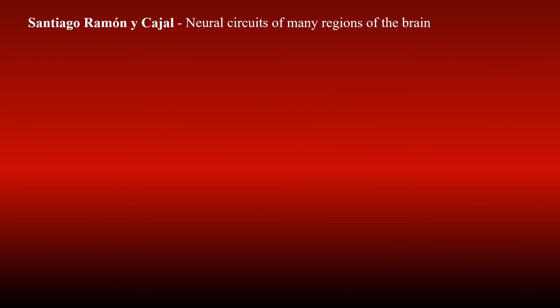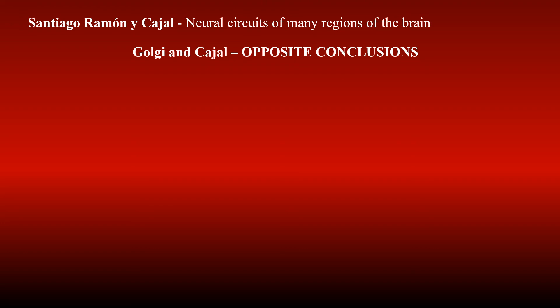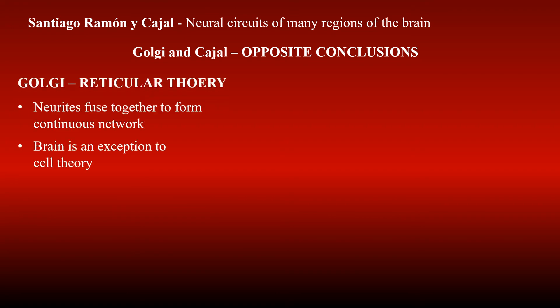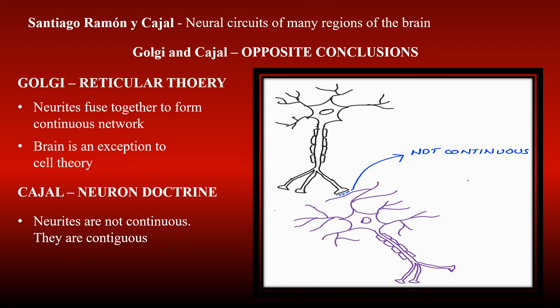This Golgi stain was used by another scientist, Cajal, to map the neural circuitry of many regions of the brain. He worked with this stain for over 25 years and came to some conclusions — and here came the controversy. Golgi and Cajal came to opposite conclusions. Golgi said that neurites of different nerve cells fuse together to form a continuous reticulum, making the brain an exception to the cell theory — this is called the reticular theory. However, Cajal concluded that neurites of different nerve cells are not continuous but contiguous; they communicate by contact. Therefore, cell theory applies to the brain and neurons as well. This is called the neuron doctrine.